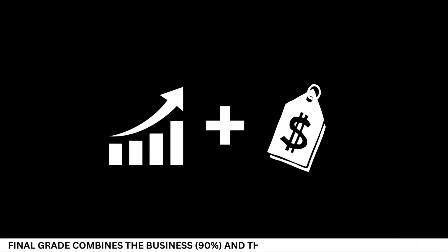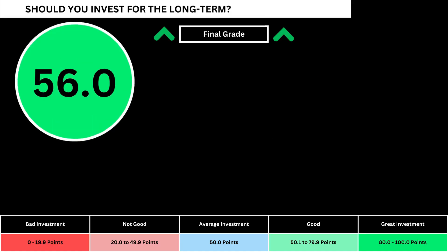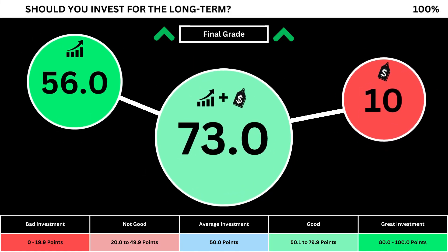Finally, we can put everything together to get the company's final grade. Adding the business grade and the fair price grade, we can see the company's final grade here. Anything less than 50 means it's not a good long-term investment. A final grade above 50 means it would make a good long-term investment if you bought the stock right now.